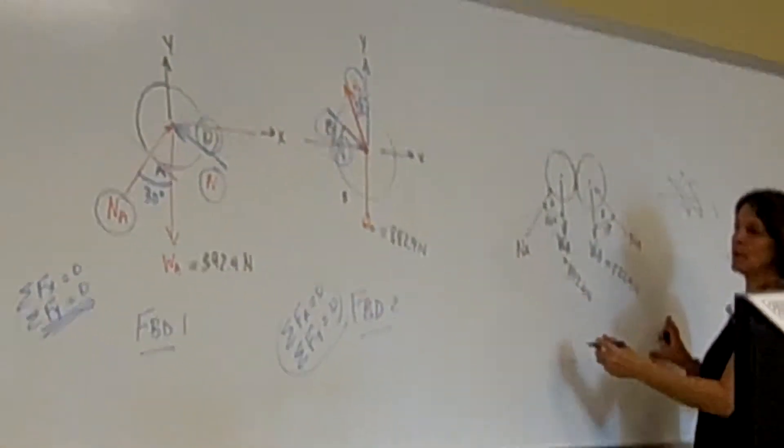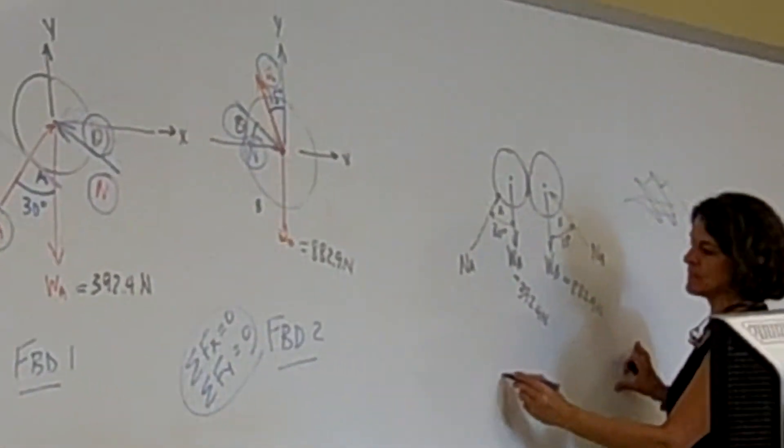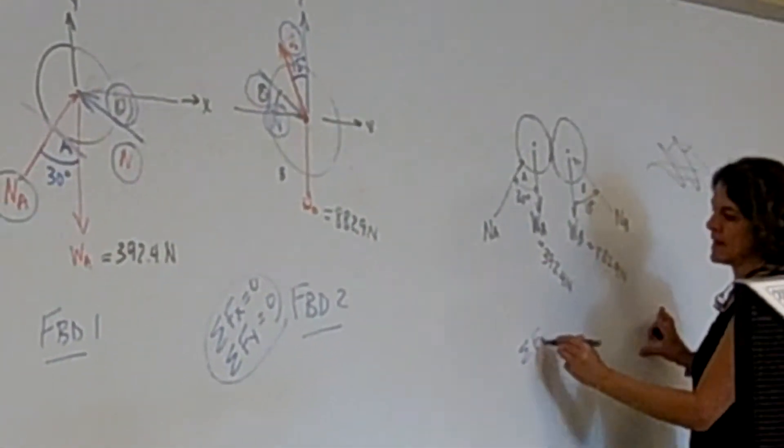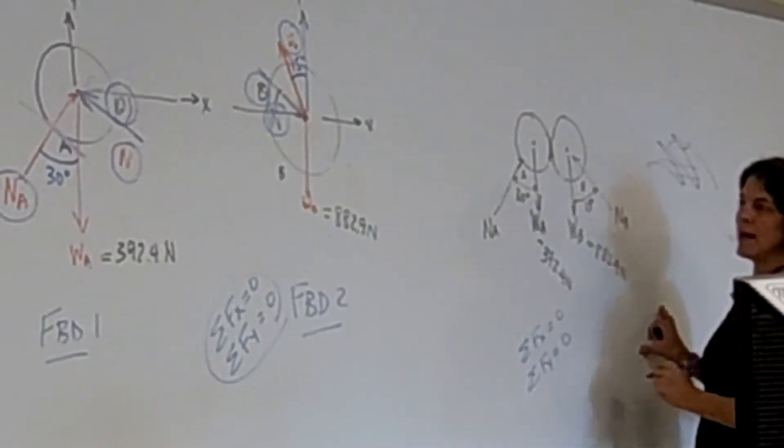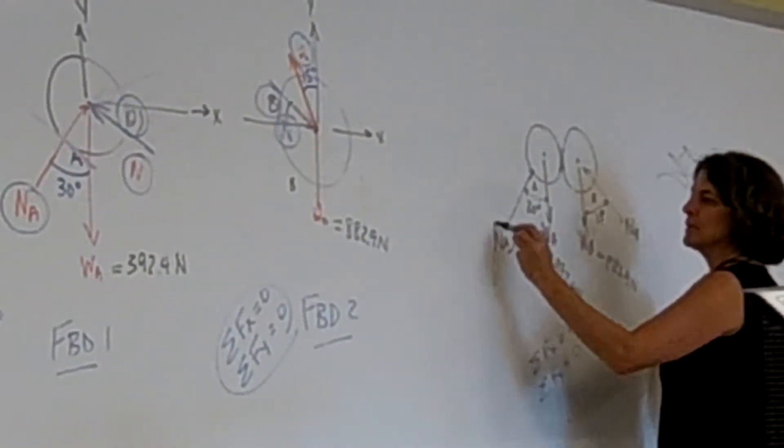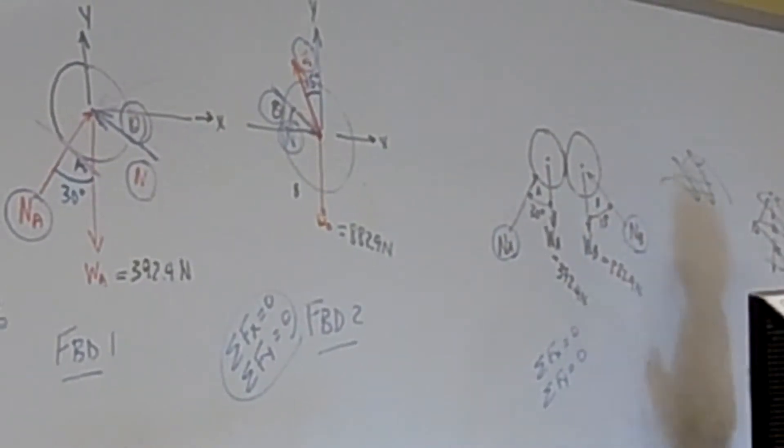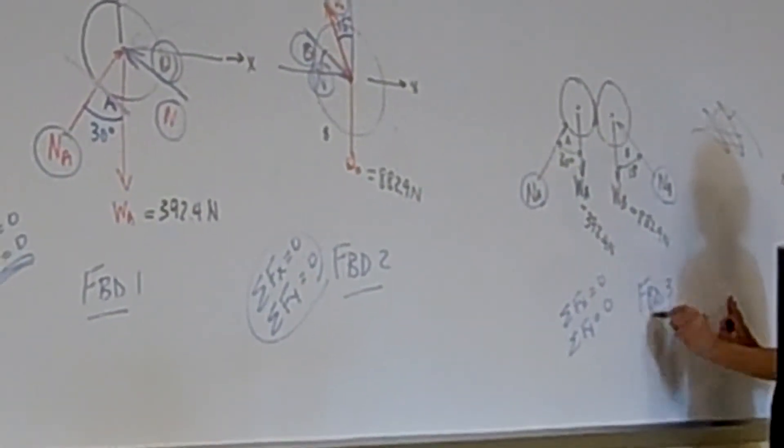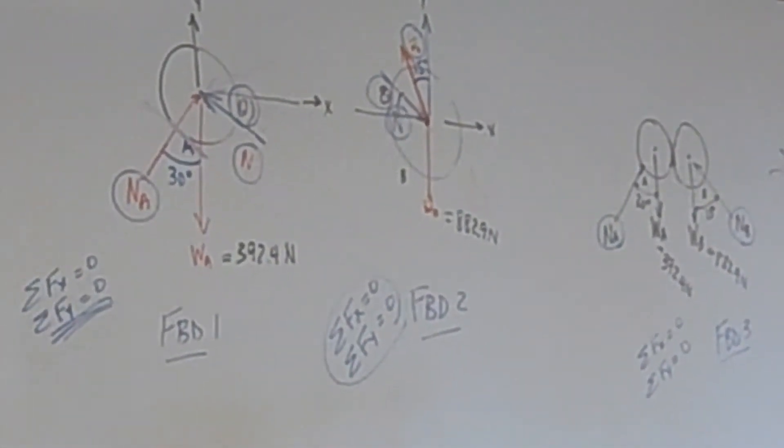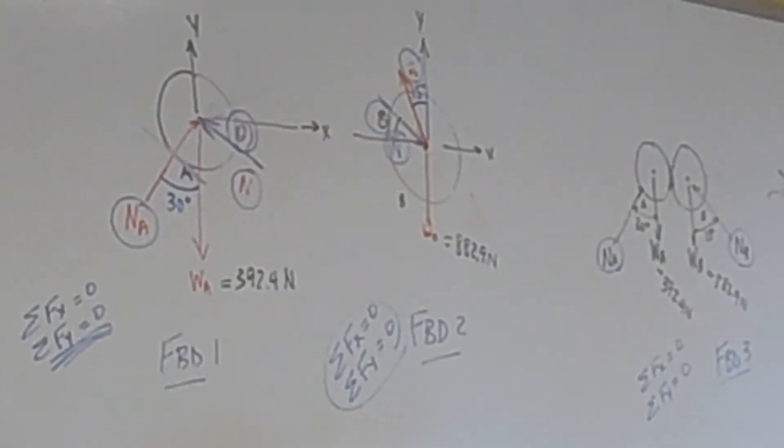What about this? How many equations do I have? Sum of the forces in x equals zero. Sum of the forces in y equals zero. And how many unknowns do I have here? Two. So which free body diagram would it be best to use the equations with first? The last one. The third one. Free body diagram three.